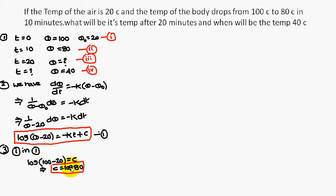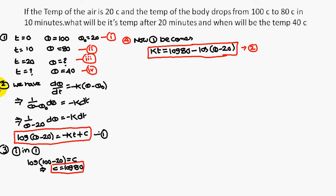We substitute C equal to log 80 into the first equation. Moving minus kt to the left-hand side and rearranging, log(theta minus 20) moves to the right-hand side and becomes minus log(theta minus 20), and in place of C we have written log 80.